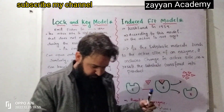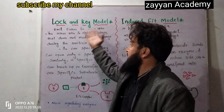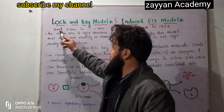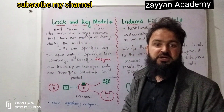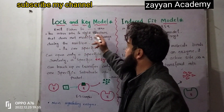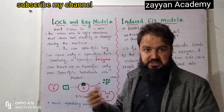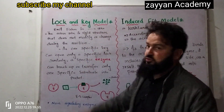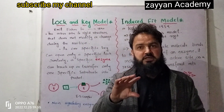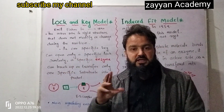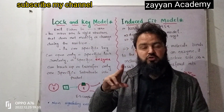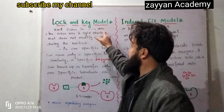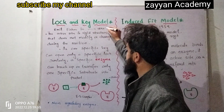The first topic is the Lock and Key Model. This was proposed by Emil Fischer, a German scientist. The Lock and Key Model explains the relationship between the enzyme and the substrate through the concept of the active site.